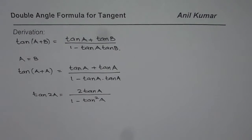So that is the double angle formula for tan. Tan(2A) is 2tan(A) divided by 1 - tan²(A). That is one way of deriving it.